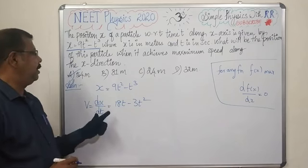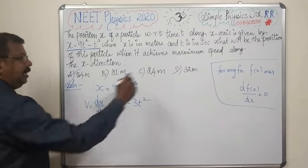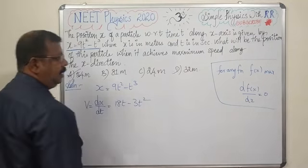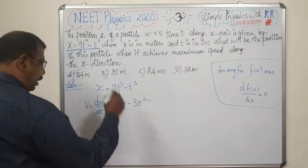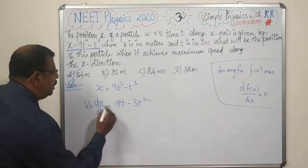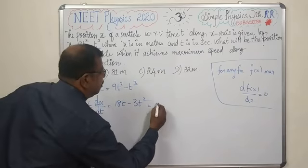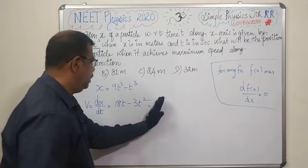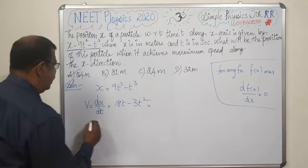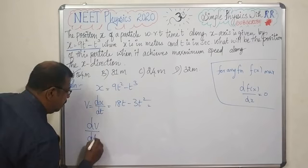If we have velocity, here is our condition: dx by dt should be equal to 0 for maximum.